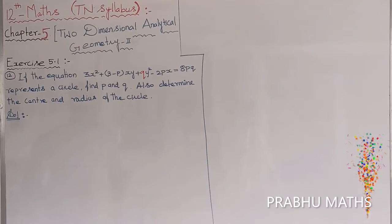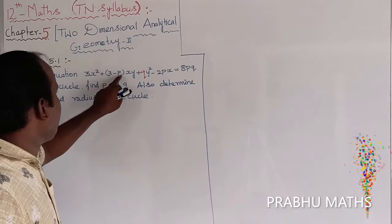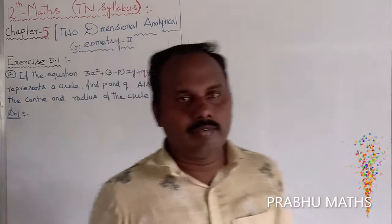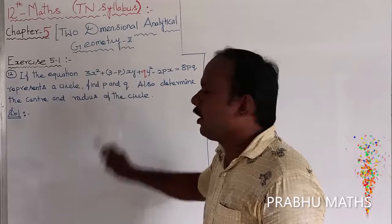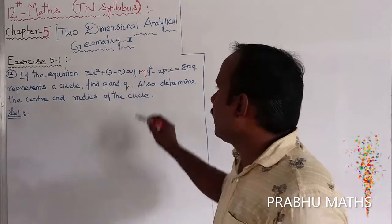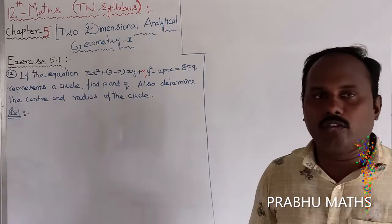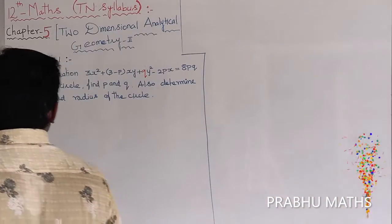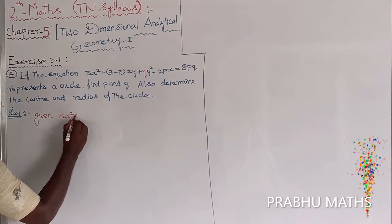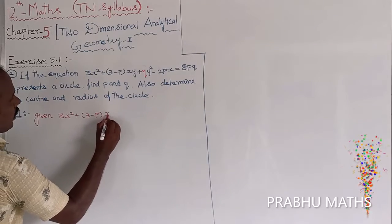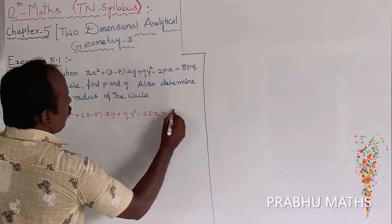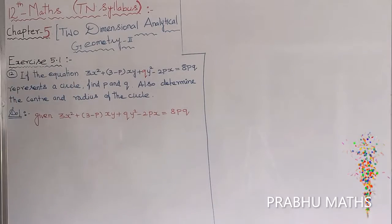The given equation is 3x squared plus (3 minus p) into xy plus qy squared minus 2px equals 8pq. First, we need to find the values of p and q, substitute them back into the equation, and reduce it to the general form of a circle. The aim is then to find the center and radius of that circle.